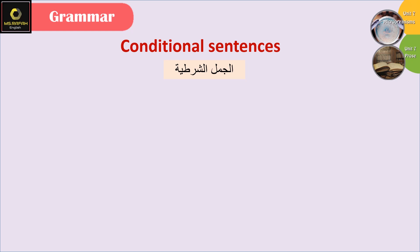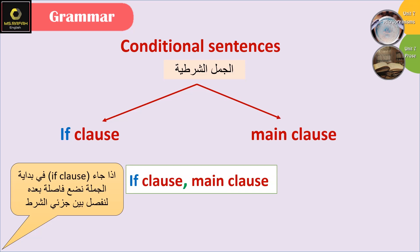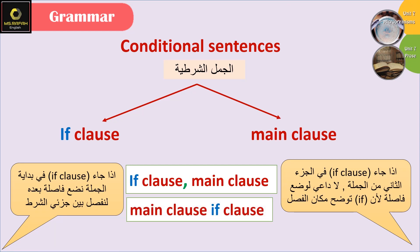Before we start, we need to know that conditional sentences consist of two parts: the condition part, called the if-clause, and the result, called the main clause. The occurrence of the first is a condition for the occurrence of the second. If the if-clause comes at the beginning of the sentence, we put a comma after it to separate the two parts. If it comes in the middle, no comma is needed. We can also swap the two parts.